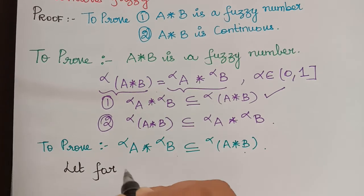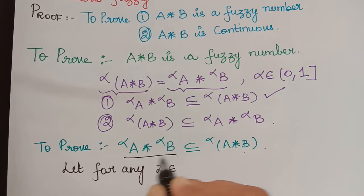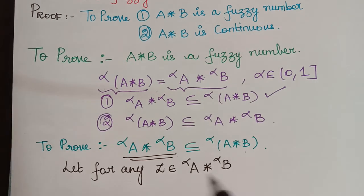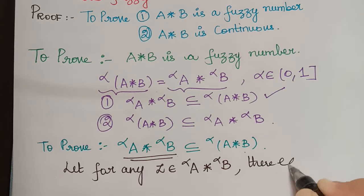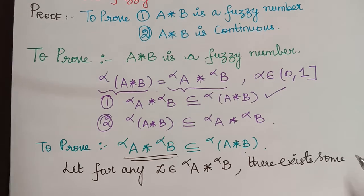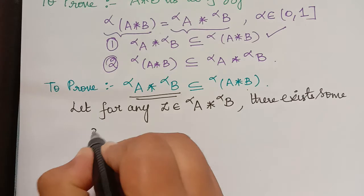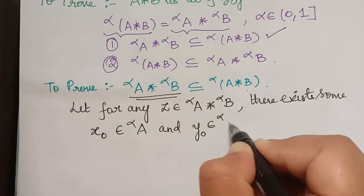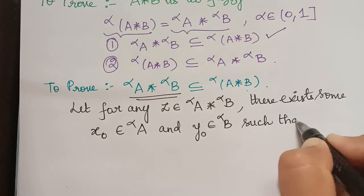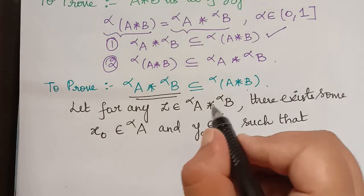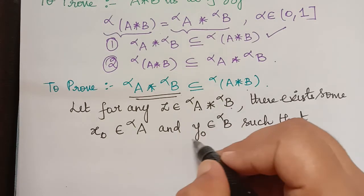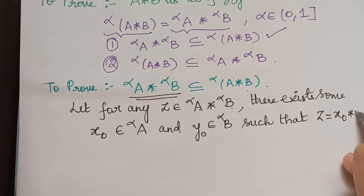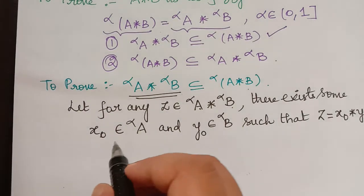Let z be any element of the alpha-cut of A starred with the alpha-cut of B. Then there exist x₀ and y₀ such that x₀ is an element of the alpha-cut of A and y₀ is an element of the alpha-cut of B, and z equals x₀★y₀.